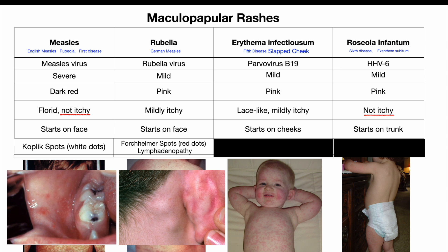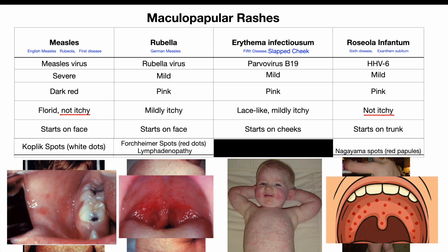Roseola also has an enanthem — an internal rash — called Nagayama spots, which appear as red papules on the soft palate. Think of the Nagayama spots as very similar to Forchheimer's spots of rubella, but a little bit more bumpy in papular form.